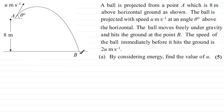Well let's just add to this diagram that at B we're told the ball is moving at 2u meters per second. And that would be a tangent to the curve, that would be the direction that it's going in. So if we just mark that in as going at 2u meters per second.